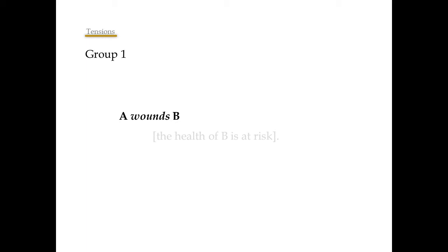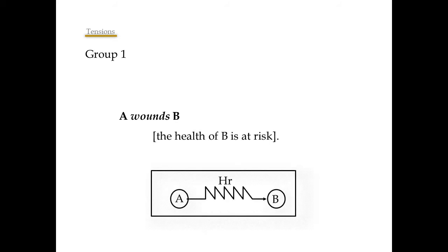Here is an example. If we have the action A wounds B, the consequence of that action will be that the tension, the health of B is at risk, becomes active. Also, I have a graphic representation of tension. In this case, it is a zigzag arrow with a mnemonic representing the tension on top of it.